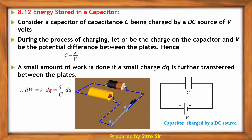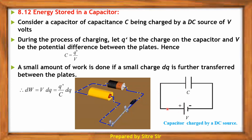The work done required to deposit this small amount of charge DQ: using C equal to Q' by V, then V equals Q' by C. Therefore DW equals V into DQ, that is Q' by C into DQ.